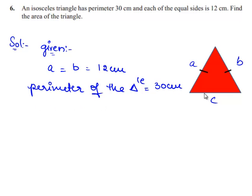We know that the perimeter of the triangle is the sum of the length of all the three sides of the triangle. Therefore perimeter is equal to A plus B plus C. Therefore 30 cm is equal to A and B which are equal to 12 cm.